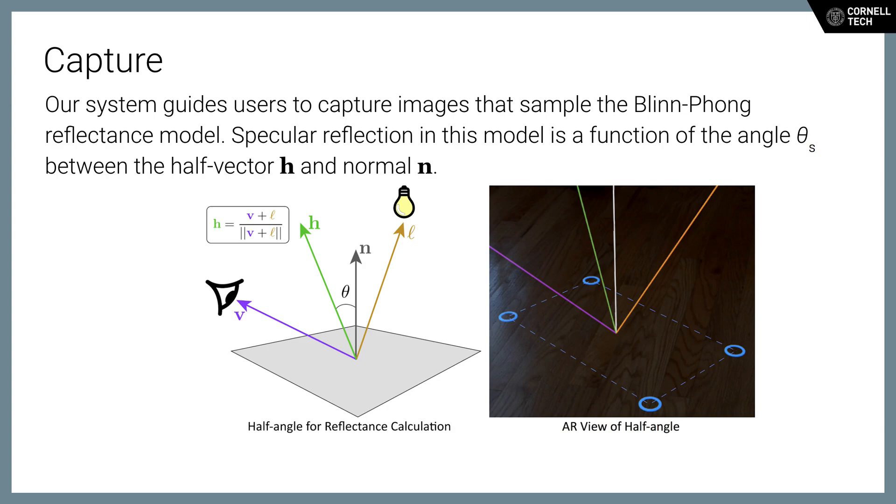We can characterize this by fitting an exponential specular component to observed intensities as a function of the angle theta between the half vector and surface normal, as shown here.